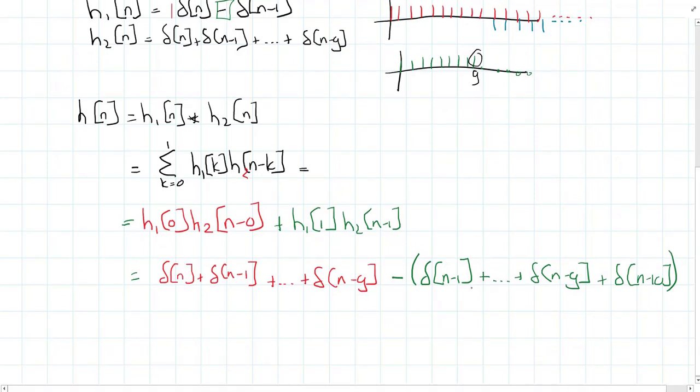So if we were now to subtract the second part from the first part, we would only be left off with delta n, since this does not cancel out. And from then on, all our factors will cancel out. So we only have to subtract delta n minus ten. So this is the total impulse response of our system.